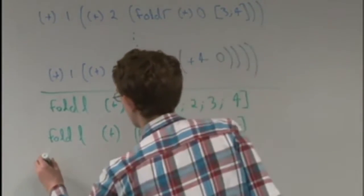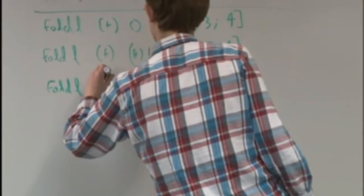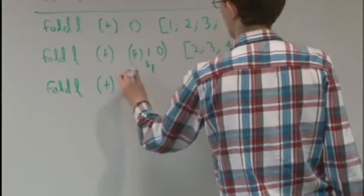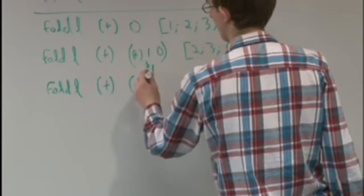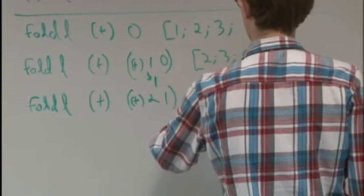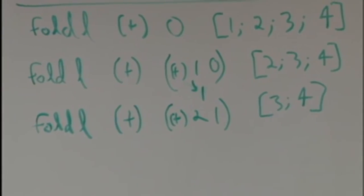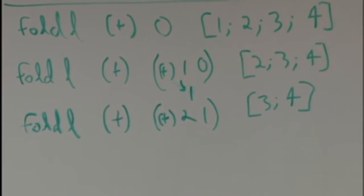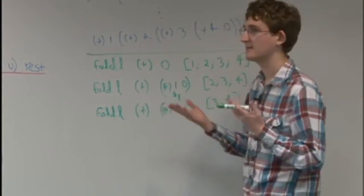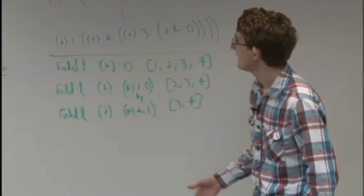Meanwhile, with fold left, if we keep going, we're adding the new accumulated value of one to the head two, and then the rest of the list. As we continue on with fold left, it doesn't build up the stack because it doesn't have any excess information to keep track of. Everything is contained in the function arguments.